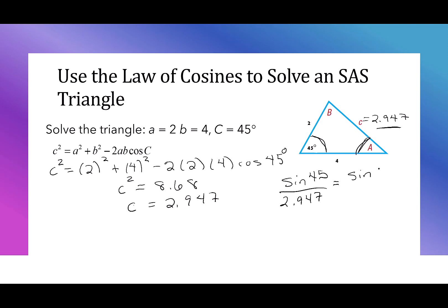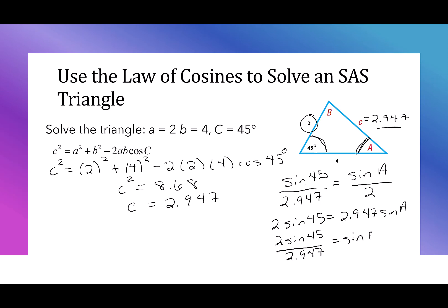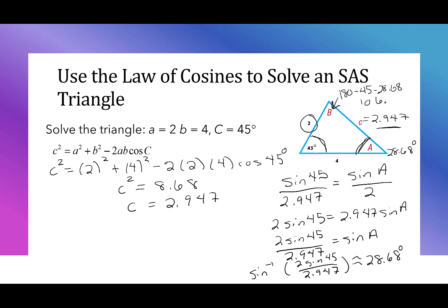...let's use A. I say the sine of A over the corresponding side of 2. We know we have to cross-multiply: 2 sine of 45 equals 2.947 times the sine of A. I want to isolate A, so I divide by 2.947. We have 2 sine of 45 over 2.947 equals the sine of A. To get the value of A, I'll take the sine inverse of 2 sine of 45 over 2.947. This gives A is 28.68 degrees. To find the remaining angle B, I'll take 180 minus 45 minus 28.68, which gives me 106.32 degrees.